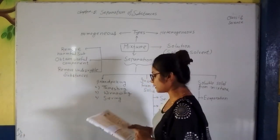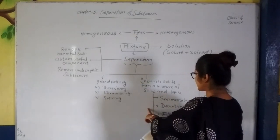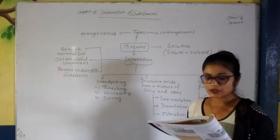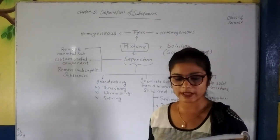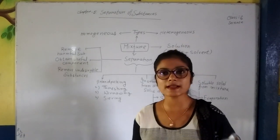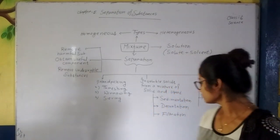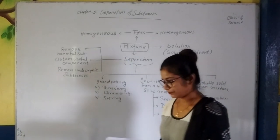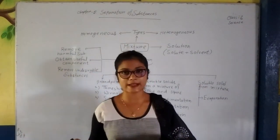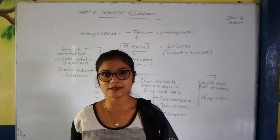Separation of insoluble solids from a liquid mixture involves sedimentation, decantation, and filtration. Sedimentation means the process of settling down — insoluble particles settle at the bottom of the liquid. This process is called sedimentation. Filtration means separating the insoluble substance from a liquid mixture using a filter — that is called filtration.